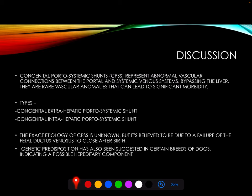Discussion. Congenital portosystemic shunts represent abnormal vascular connections between the portal and the systemic venous system, bypassing the liver. They are rare vascular anomalies that can lead to significant morbidity. They are divided into two types: the extra-hepatic and the intra-hepatic ones.